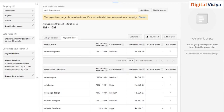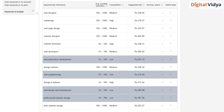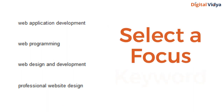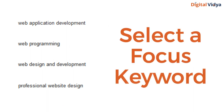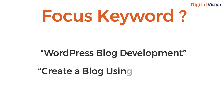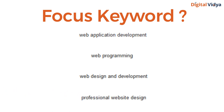Now, you have to make use of the keywords shortlisted by you in the previous step. For every page or blog post, you need to select a focus keyword. A focus keyword is a particular phrase or search term for which you want your page to rank. This can be any keyword from your list which has maximum search volume and is relevant to the content.